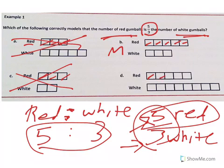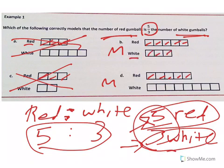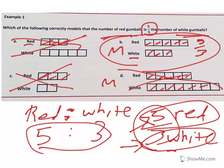Go down to D. One, two, three, four, five. That's also a maybe. So it's either B or D. Now I know there are three white gumballs. Where it says white, let's see. One, two, three. We have five to three. That looks like a strong possibility. And down here, we have one, two, three, four, five, six. It's more than three. We know that's not it. So our answer is, of course, B.